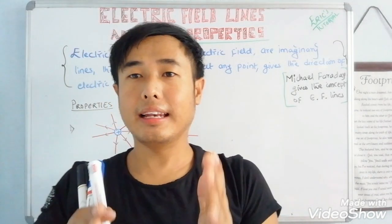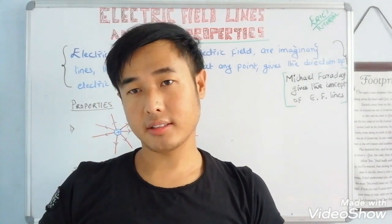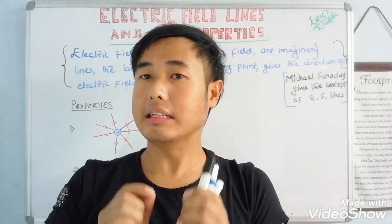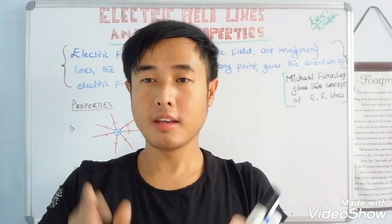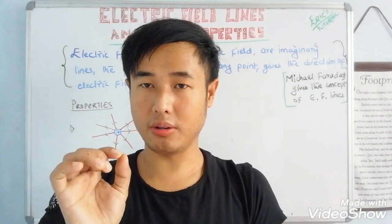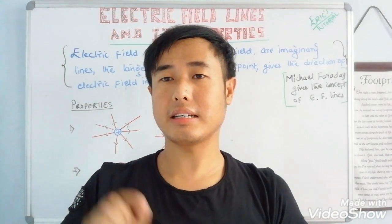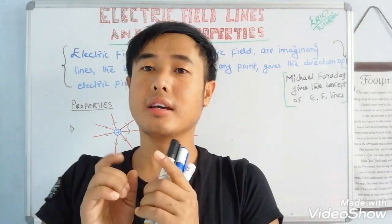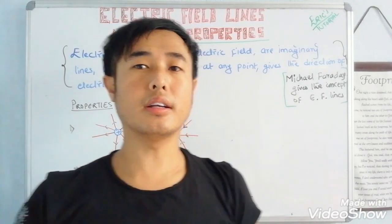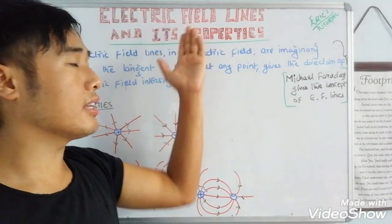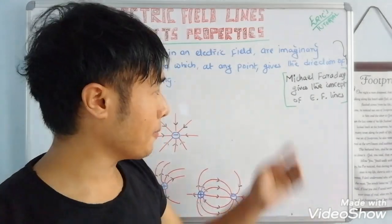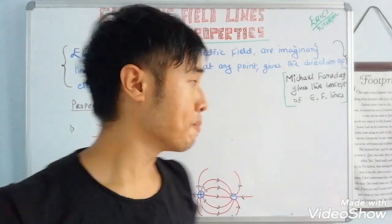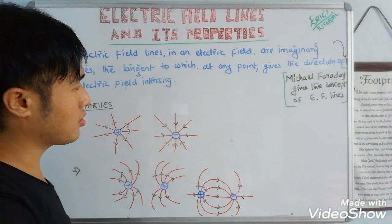Electric field is real, but electric field lines are imaginary. Electric field lines are used to represent the electric field. The concept of electric field lines was given by scientist Michael Faraday.